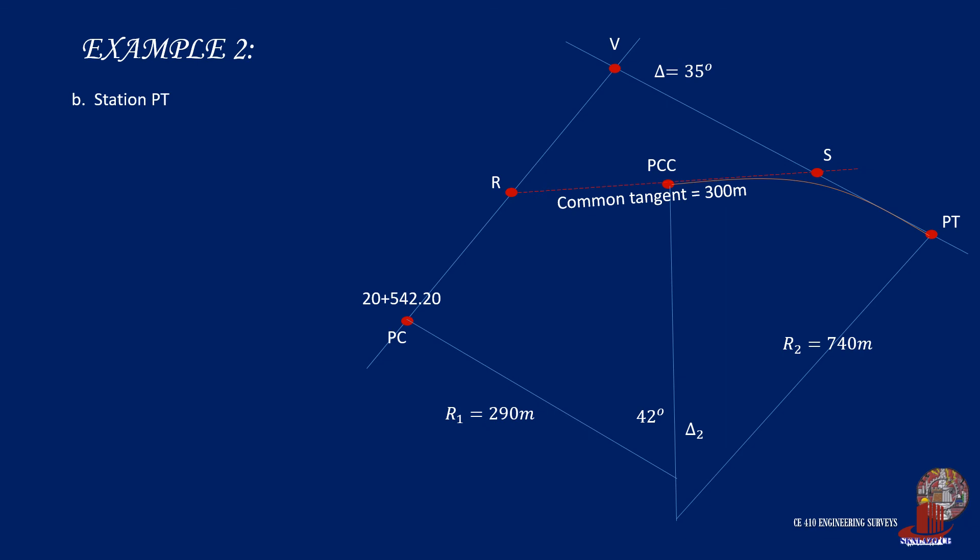Given station PC, we only need to identify the lengths of curves 1 and 2 to identify station PT. With the same formula, delta times R times the conversion 2 pi over 360 degrees, L1 is then solved as 212.58 meters, and L2 would be taken as 369.38 meters.